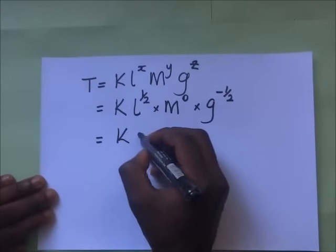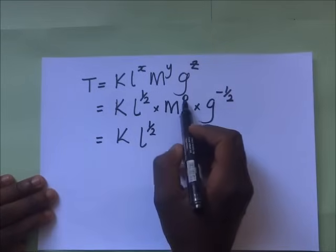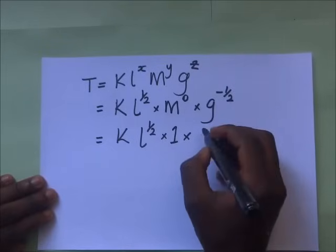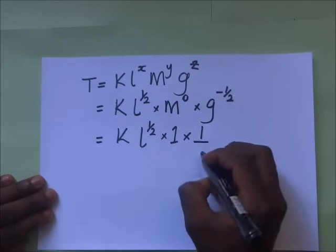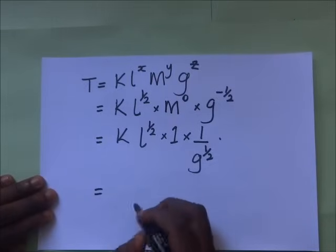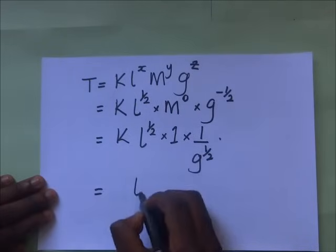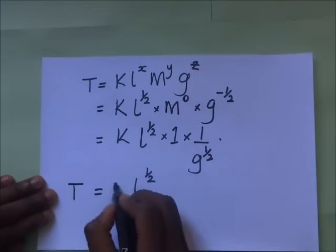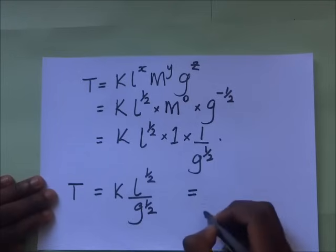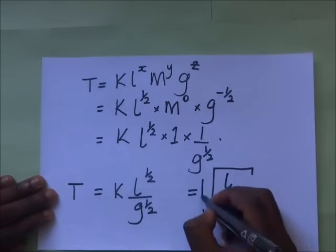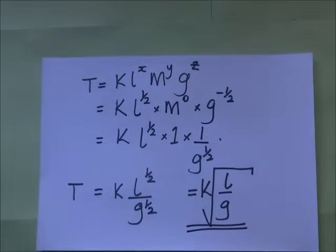Now that we have x = 1/2, y = 0, and z = −1/2, we can write the equation: T = k · L^(1/2) · M^0 · G^(−1/2). Since anything to the power zero equals one, M^0 = 1. And G^(−1/2) = 1/G^(1/2), so the equation becomes T = k · L^(1/2) / G^(1/2), which is the same as T = k√(l/g). That is the derived equation.